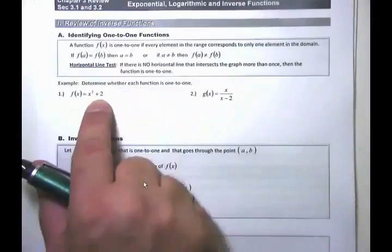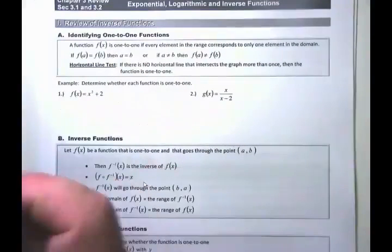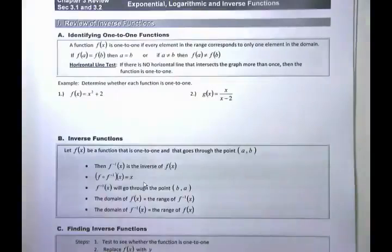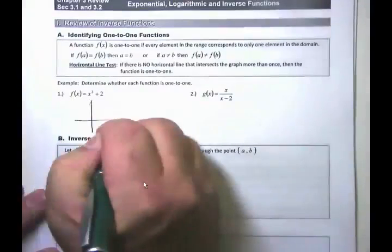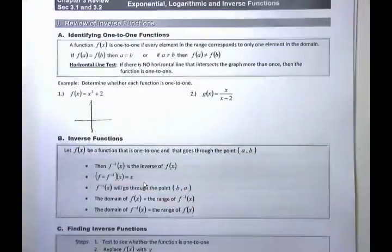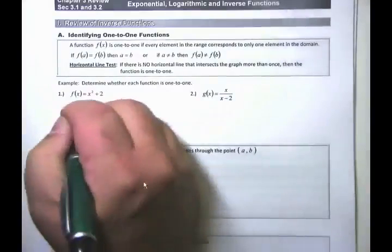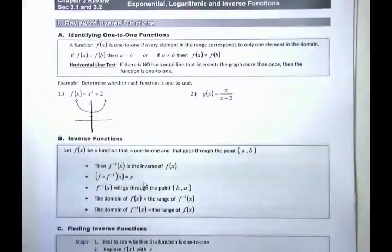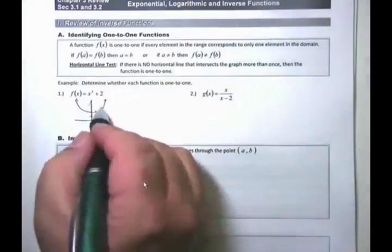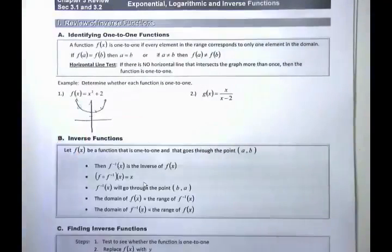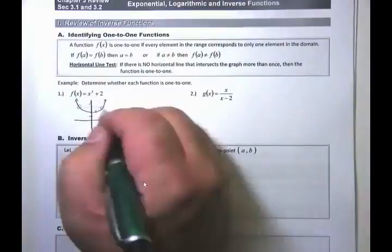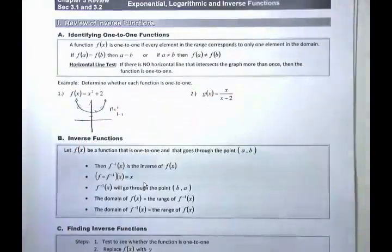Let's look at the graph of f(x) = x² + 2. You don't need a calculator for this. x squared is a parabola, and plus 2 shifts it up 2 units. Is this function one-to-one? A horizontal line intersects it more than once — it fails the horizontal line test. This is not a one-to-one function.